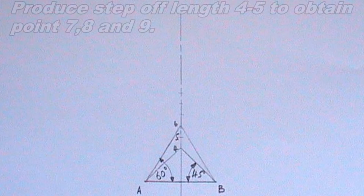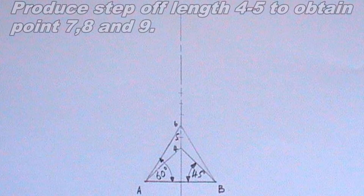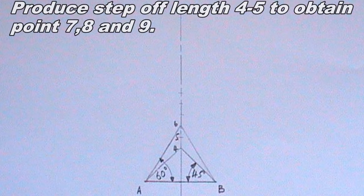Along the vertical line, step off lengths 4 to 5 to obtain points 7, 8, and 9.